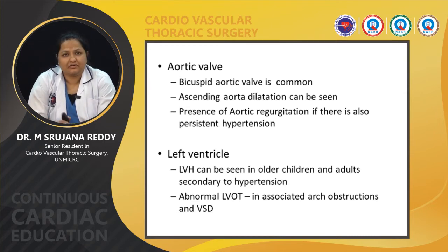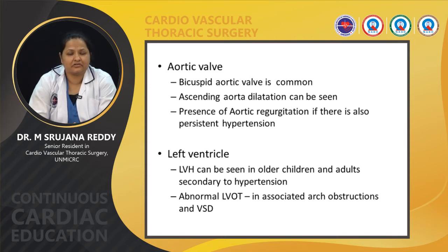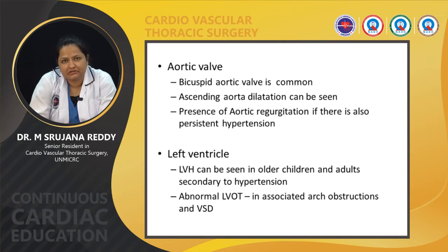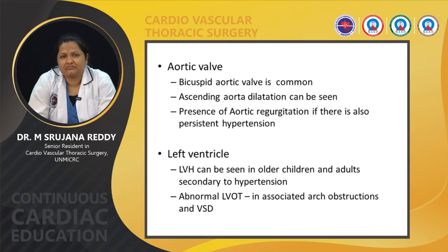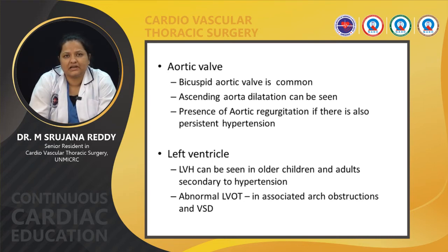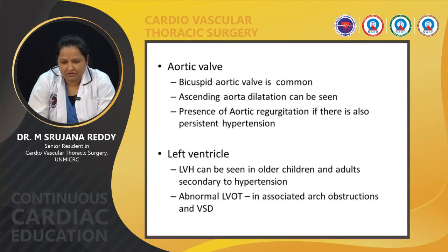As the disease progresses, bicuspid aortic valve with persistent hypertension secondary to coarctation of aorta can lead to development of aortic regurgitation. Coming to left ventricular changes, left ventricular hypertrophy is usually seen in older children and adults secondary to hypertension. With associated arch obstruction, there can be an abnormal LVOT.